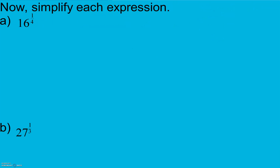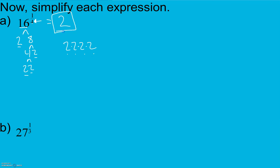Feel free to pause here and give these a try. We're looking for what number times itself 4 times gets us to 16. 16 is 2 times 8, 8 is 4 times 2, and 4 is 2 times 2. So when we break this down to its prime factors we have 2 times 2 times 2 times 2. Since we're looking for a group of 4 things and I have four 2's, this equals 2. So 16 raised to the 1/4 power equals 2.